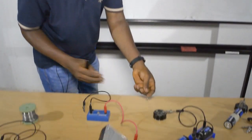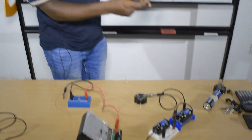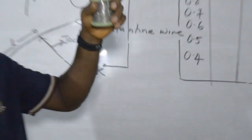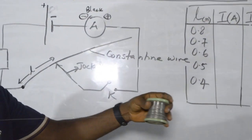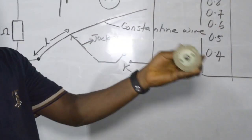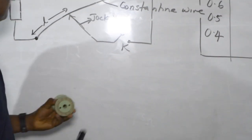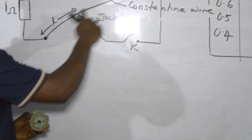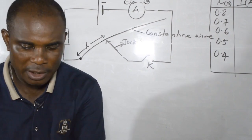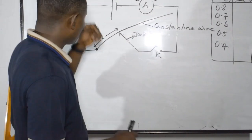Now, this is the constantan wire from the resistor. This is a constantan wire and it has different thicknesses — we have 26 gauge and 28 gauge. In this experiment they gave us a length from here to here. This constantan wire is also a resistor, as we will verify.